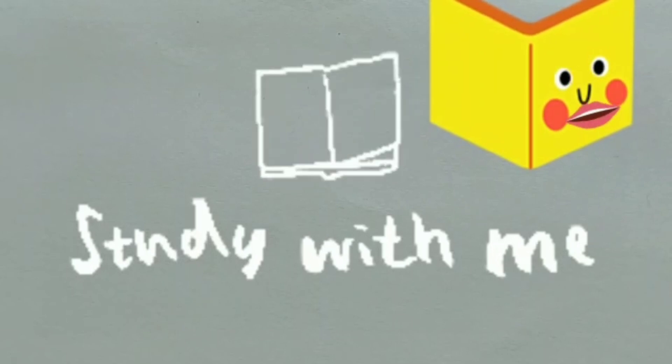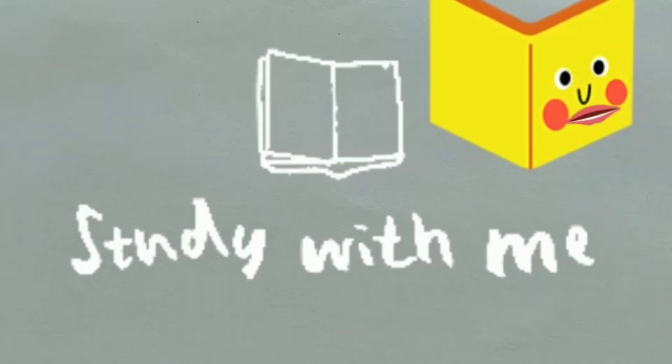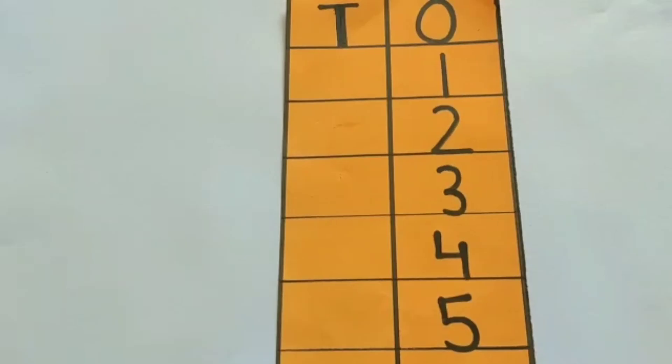Before starting this activity, let's read forward counting 1 to 10. Children, as you know, T means 10 and O means 1.